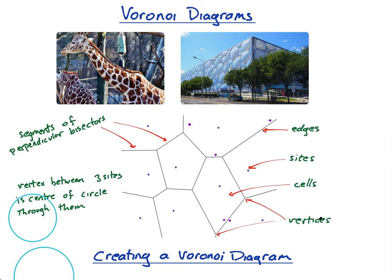Vertices are where the edges meet. So the edges meet at a vertex — that's a vertex, that's a vertex, that's a vertex. Note that it's always three edges that meet at a vertex — look, three edges here, three edges here, three edges here — that's always the case.